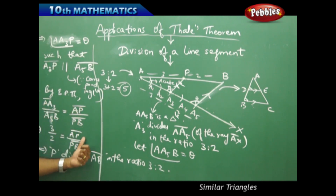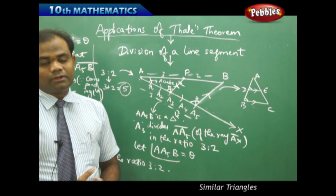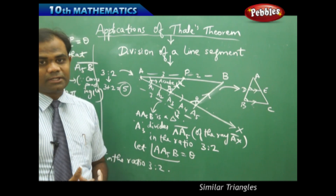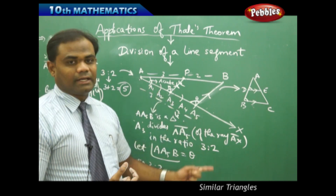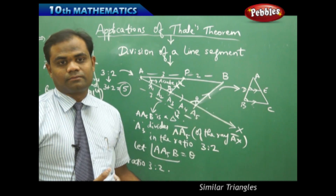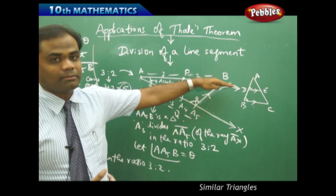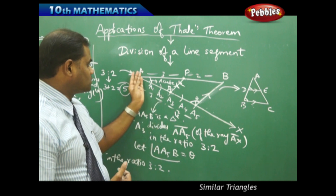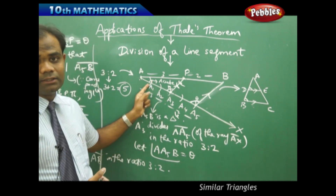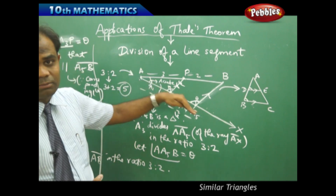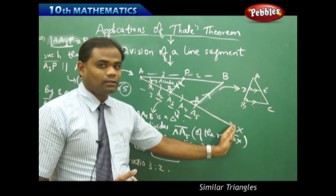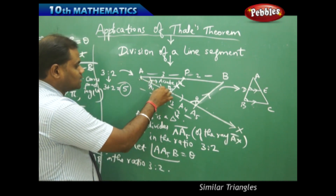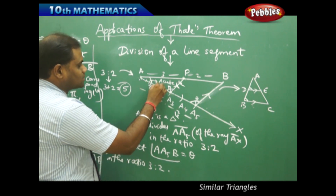If the ratio changes, the number of parts which divide the ray AX changes, and we proceed in a similar manner. To recap: initially I draw a line segment AB, and then to divide it in the ratio M:N, I first draw a ray AX making an acute angle from the line segment AB using a protractor. Once I draw an acute angle, I get a ray AX, and on that ray I take suitable distances cutting equal arcs each time.